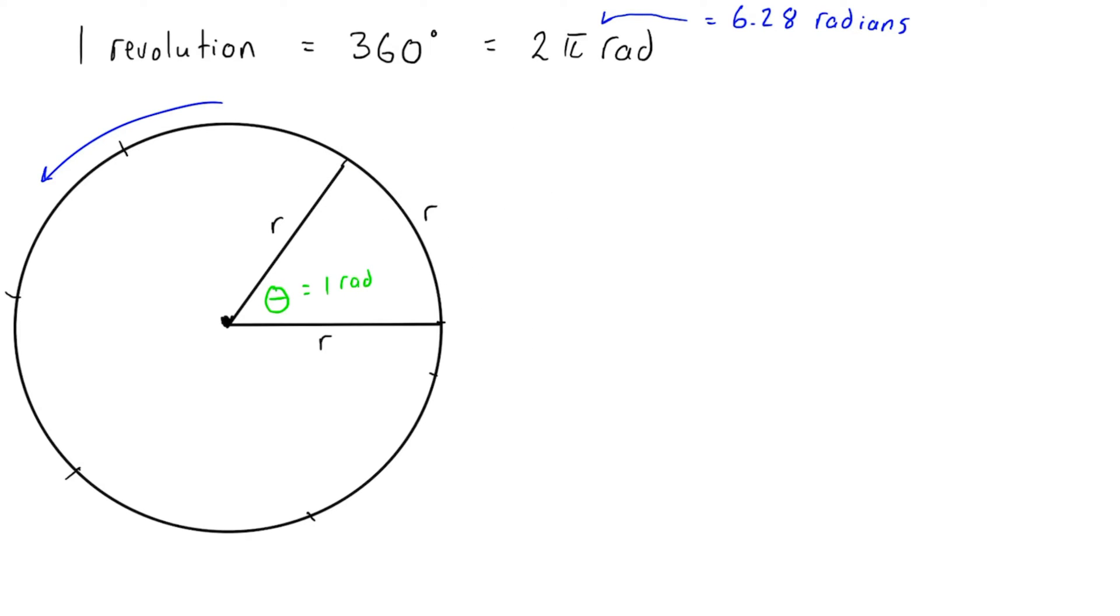This curved line here—the distance from here to here along that circular path—if it is r, then we get one radian as the angle. That means this is also one radius, this is also one radius, this is also r, this is also r, r, and this little last guy in here is about 0.28r. That would give us 6.28 radians in total to complete the full circle, or 2π radians.